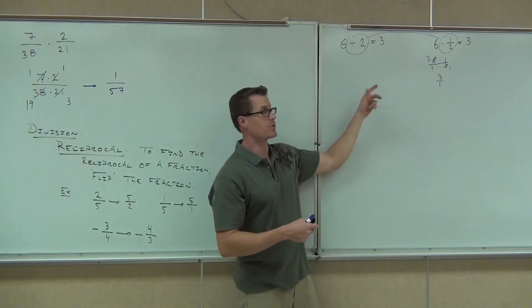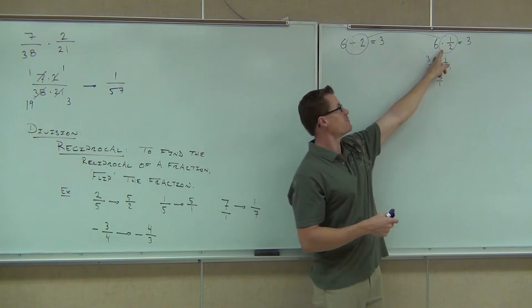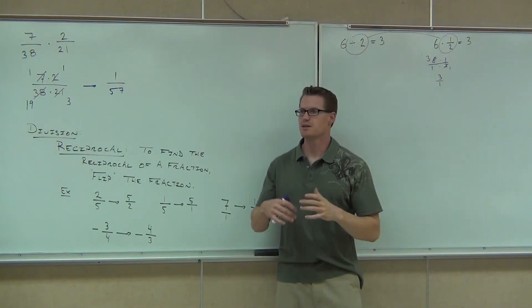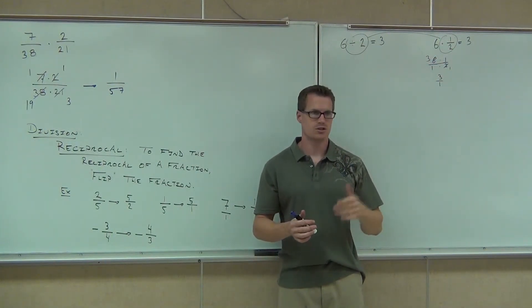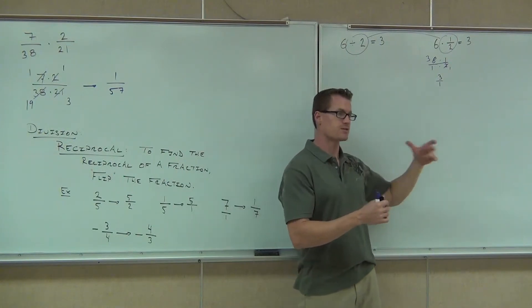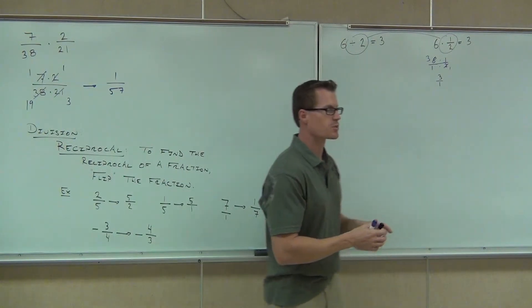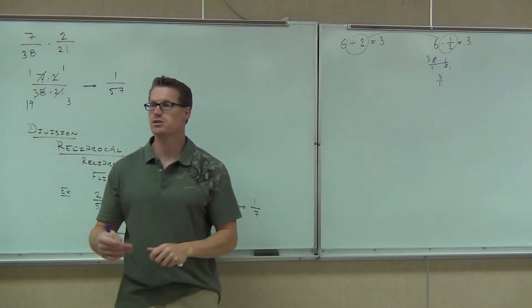Instead of dividing by a number, I can multiply by the reciprocal of that number, and it will give me the same exact thing. You with me on this? I just showed it. It says instead of dividing, we could actually multiply by a reciprocal, and that's exactly how we accomplish the division of fractions.